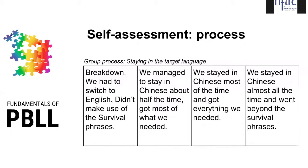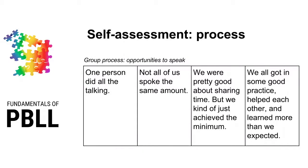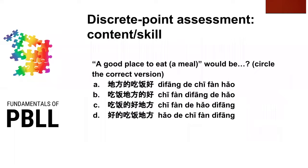You'll also want to assess student progress with regard to the process of the project — working in groups and staying in the target language. For example, 'What happened in your group with regard to staying in Chinese?' — ranging from having to switch to English through staying in Chinese some, most, or almost all of the time. Similarly, dividing labor effectively is assessed: if one person hogs all the talking time, that represents a failure. These are self-assessed items.